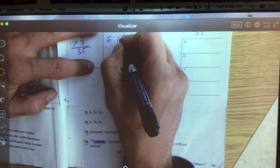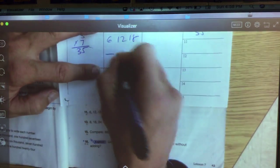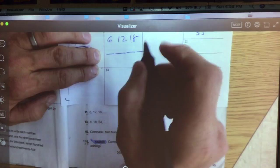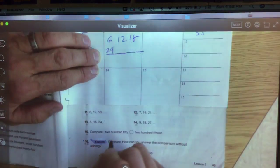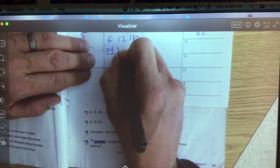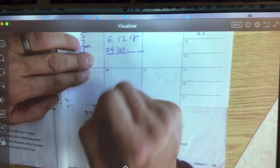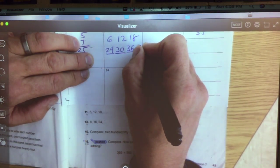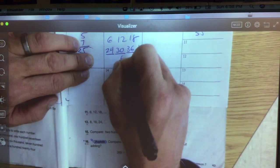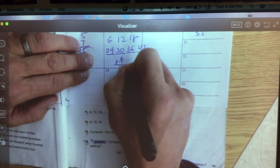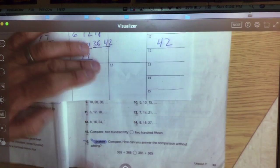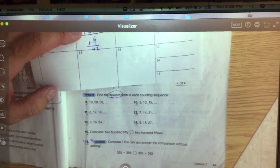6, 12, 18, 4th term, 5th term, 6th term, 7th term. 18 plus 6 would give me 24. 24 plus 6 would give me 30. 30 plus 6 would give me 36. And 36 plus 6 would give me 42. Or 6 times the 7th term is 42. 12, 13, 14, 15 are just like that.